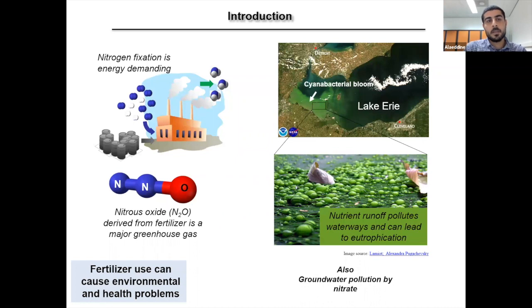That's why farmers use fertilizers in order to guarantee a maximum input of nitrogen for plants and especially for crops. The problem is that the use of fertilizers comes with many drawbacks. First, the industrial nitrogen fixation is very energy demanding. And together with the emission of the nitrous oxide derived from the fertilizer, which is a major greenhouse gas, this contributes to the problem of climate change.